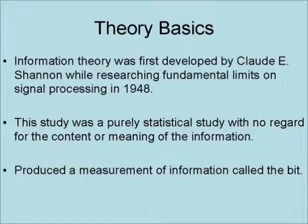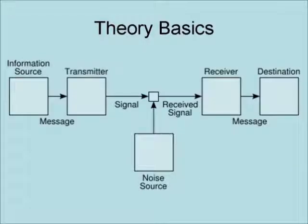It produced a measurement of information called the bit. The full concept is illustrated in this chart, which includes a source of information that produces the message. The message is then converted by a transmitter into a signal. At this point, noise can degrade the signal causing a loss of information. The signal is then picked up by a receiver so that the message can be sent to its destination.